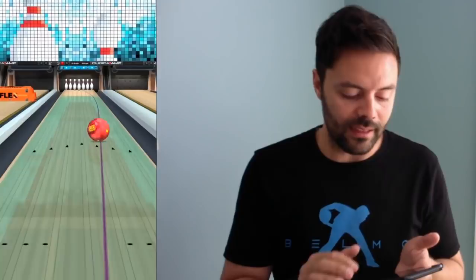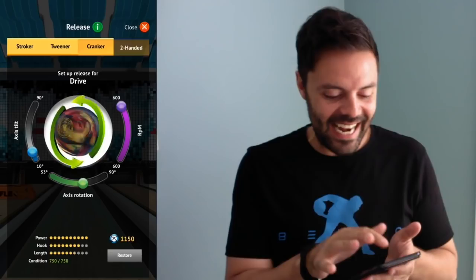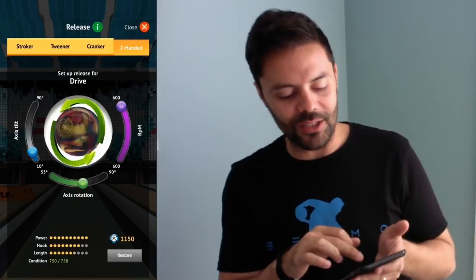That was a better shot. So that's our cranker style and then the final style is two-handed which I tend to play all the time. And as you can see that my RPM maximum is going all the way up to 600 RPM. I can now change my axis rotation all the way to 90 degrees if I chose. I can also increase my tilt all the way to 90 degrees if I would like.